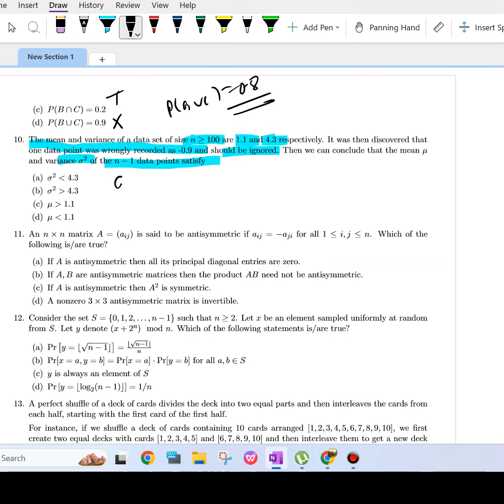Since the gap between mean and the dropped data point is less than the standard deviation, that is square root of 4.3.